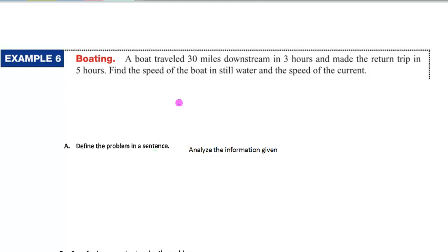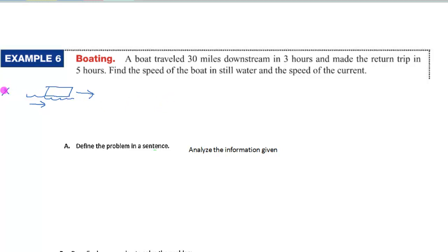Here's our next problem. A boat traveled 30 miles downstream in 3 hours and made the return trip in 5 hours. Find the speed of the boat in still water and the speed of the current. When the boat travels downstream, the current pushes it along, so it travels faster — that trip takes 3 hours. When it goes back upstream, it's fighting the current and goes slower, taking 5 hours.